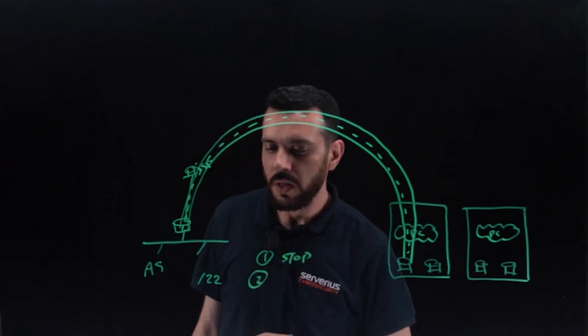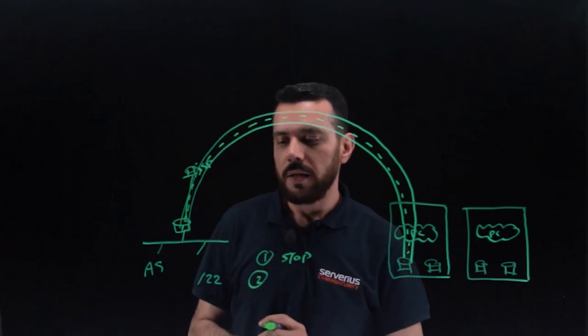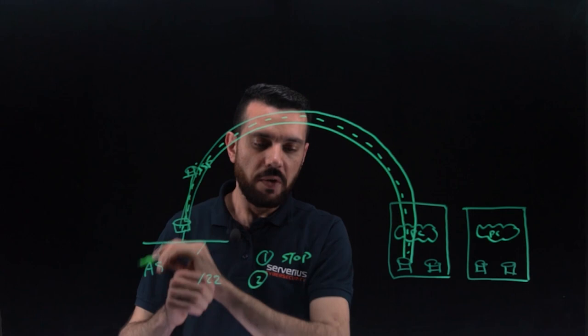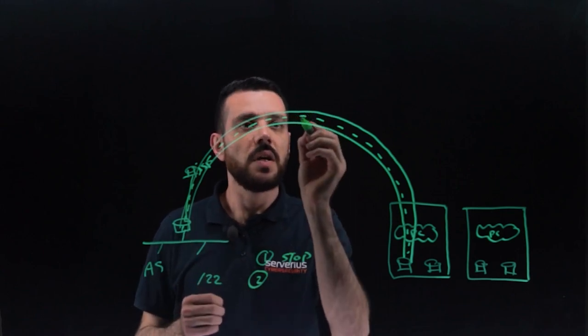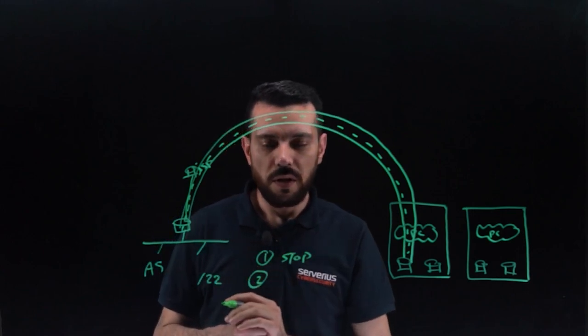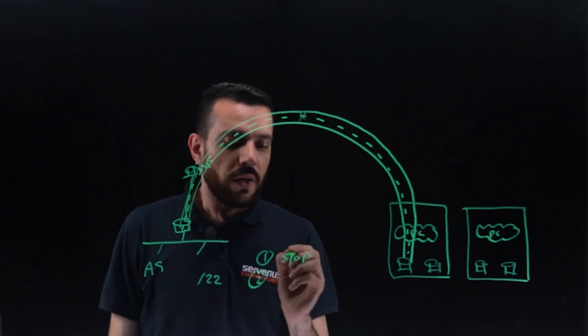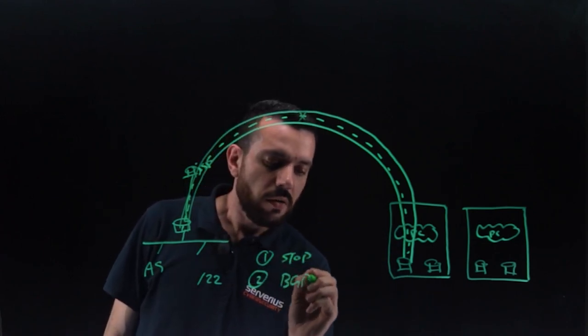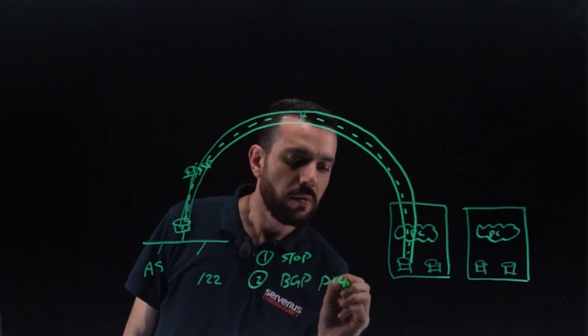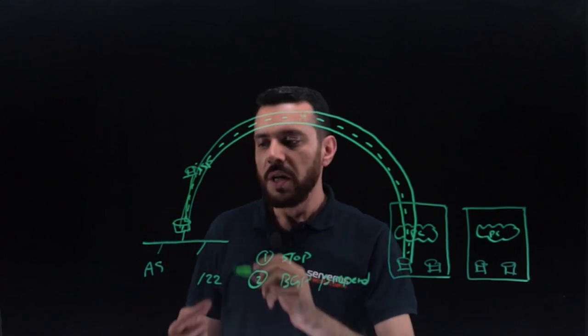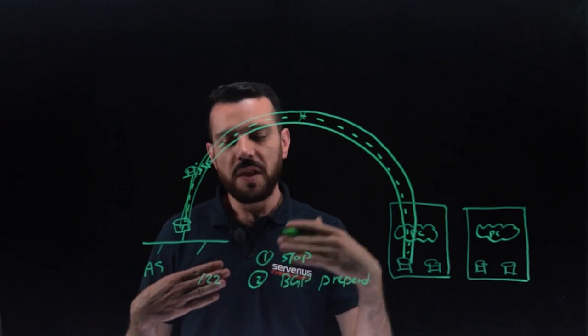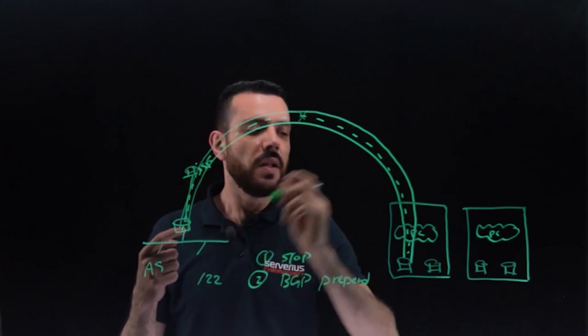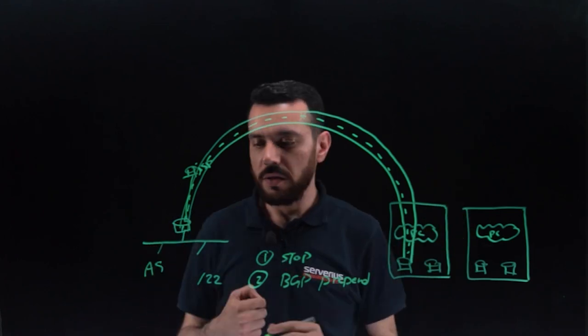The second, if you don't want to stop announcing your prefix to your ISP, in case this BGP goes down, for example, you can play with the BGP prepend in order to make the path longer through your ISP than the path through our network.